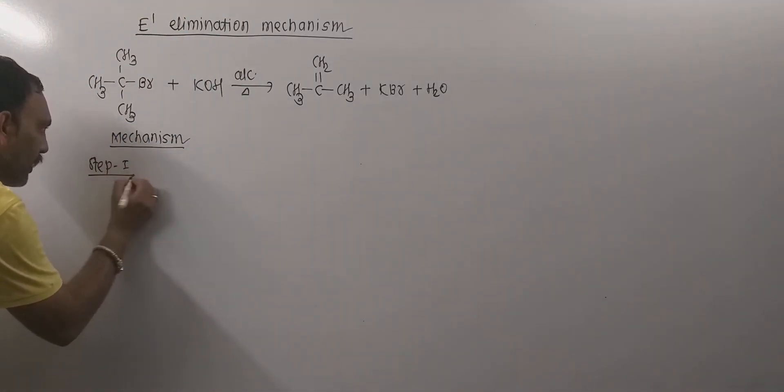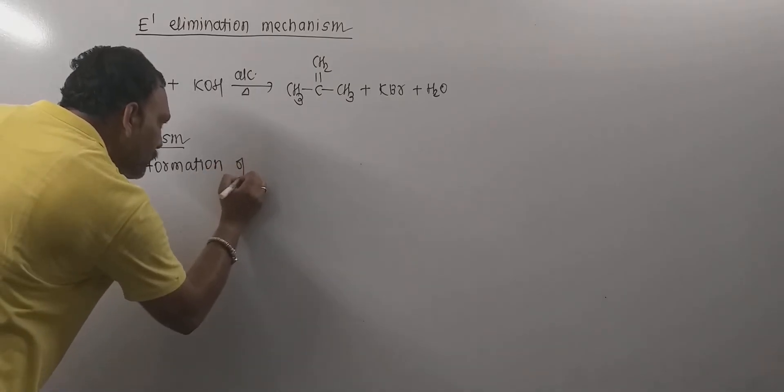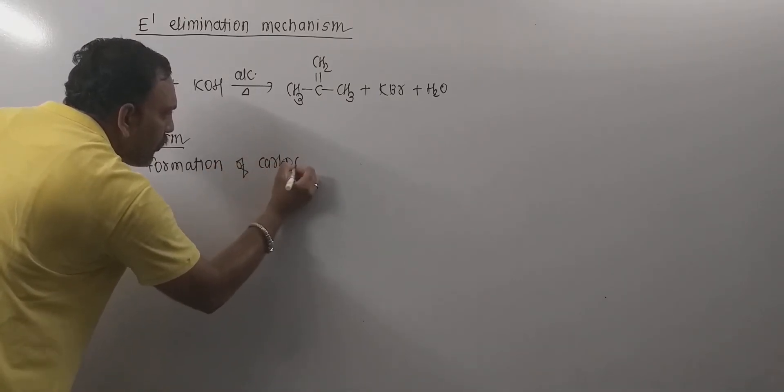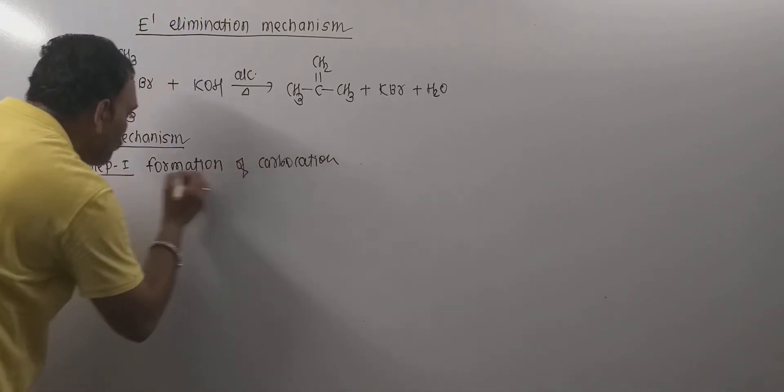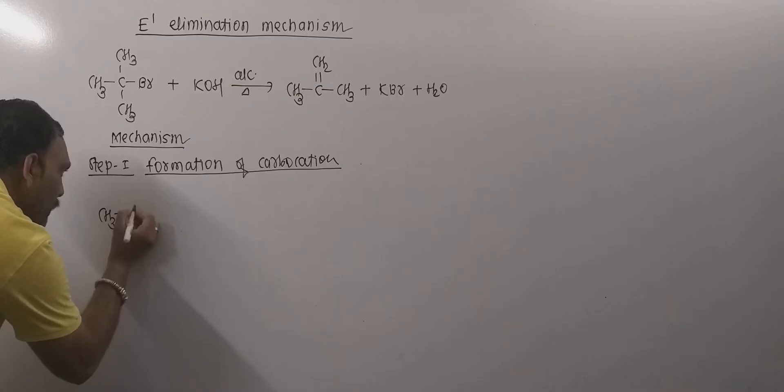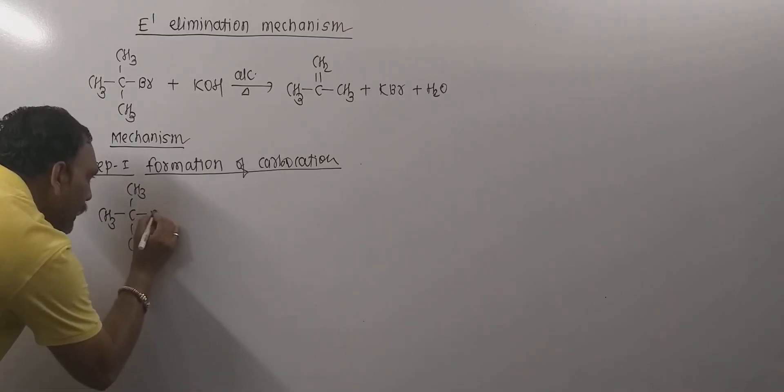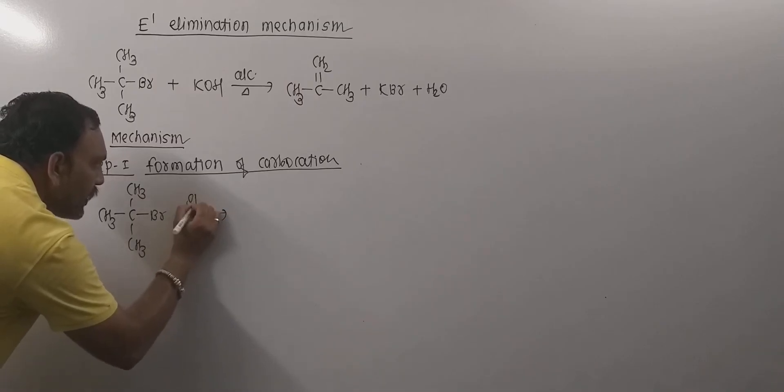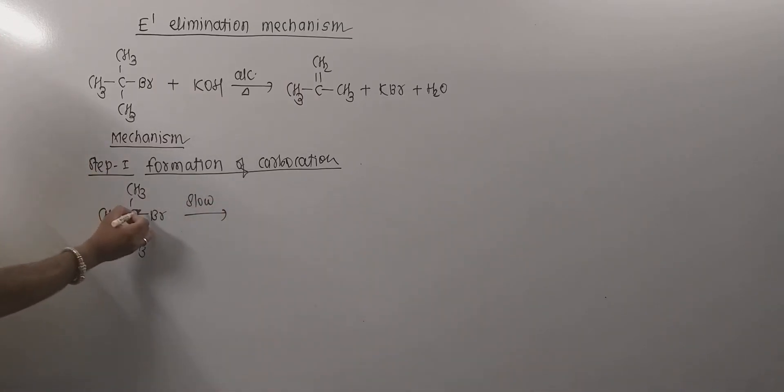Step number one: In the very first step, carbonium ion is formed, so the first step can be termed as formation of carbocation. The very first step is the slower one and it involves the departure of halogen from the alpha carbon. This is a slow step.